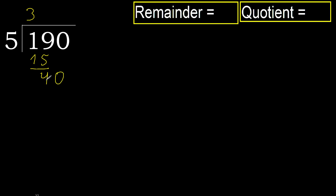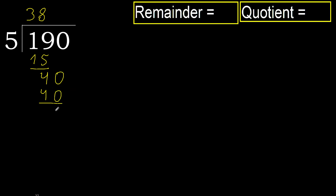Next. 40. 5 multiplied by 8 is 40, is not greater. Subtract 0. Next — there is no number, therefore finish it.